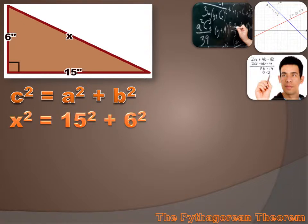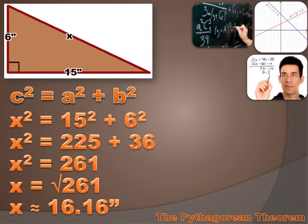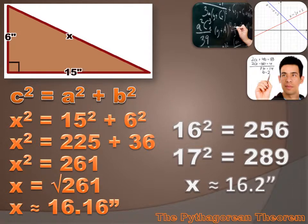We could say that x squared equals 15 squared plus 6 squared. Now we just do the math: x squared equals 225 plus 36, or x squared equals 261. I can take the square root of both sides of this equation, so x equals the square root of 261. If I plug that into my calculator I get x equals 16.16. If I didn't have a calculator I could estimate — 16 squared equals 256 and 17 squared equals 289, and 261 is closer to 16 squared, so we'd estimate that x equals approximately 16.2.